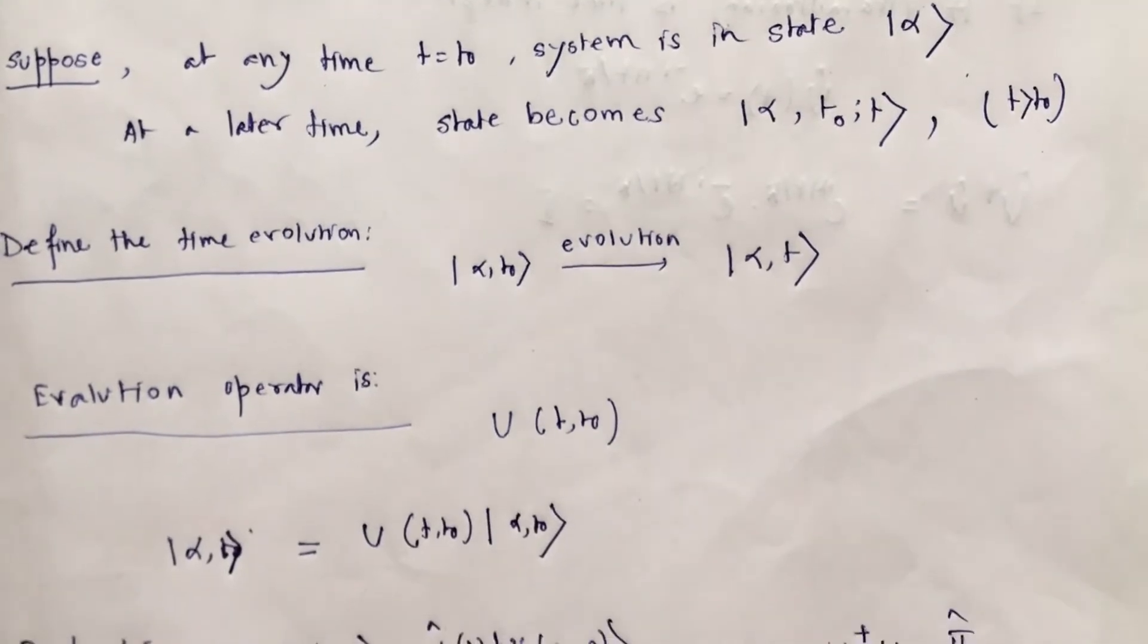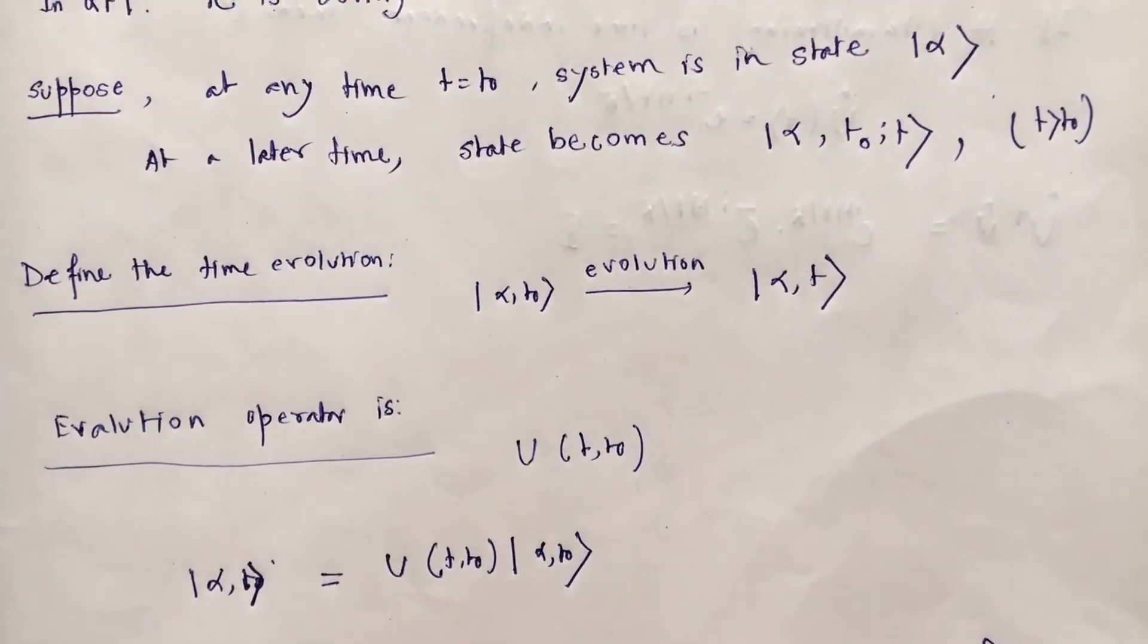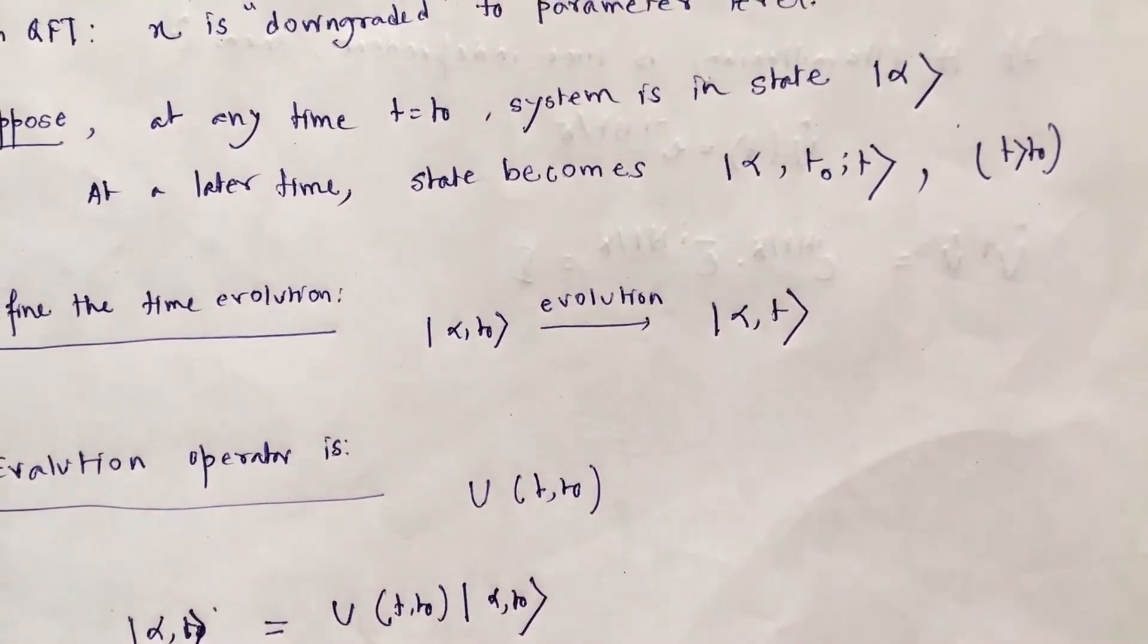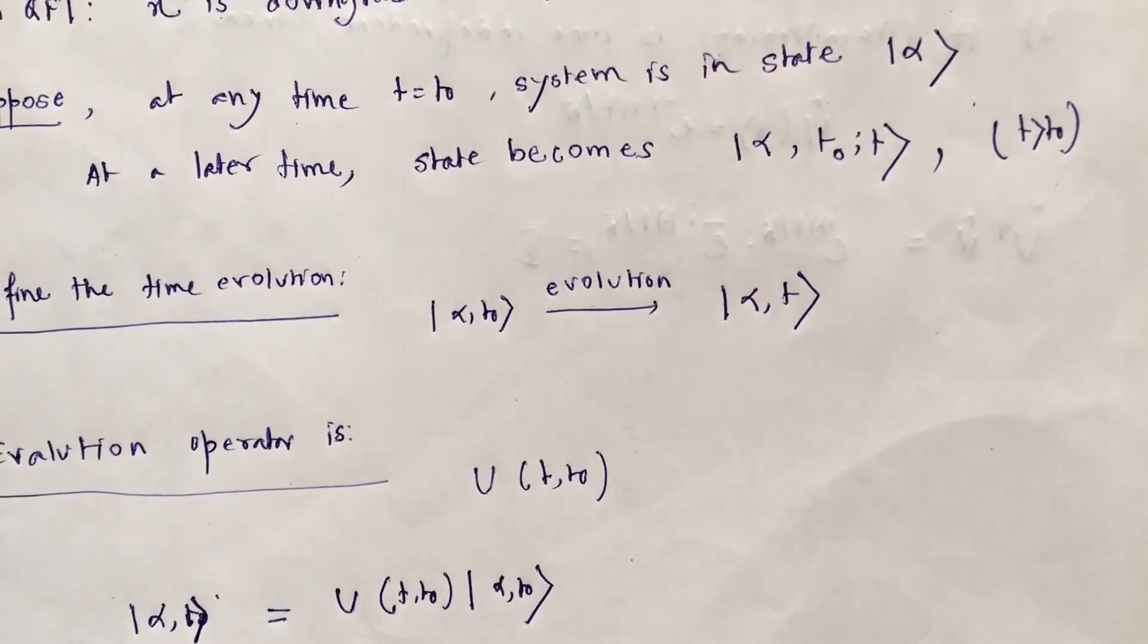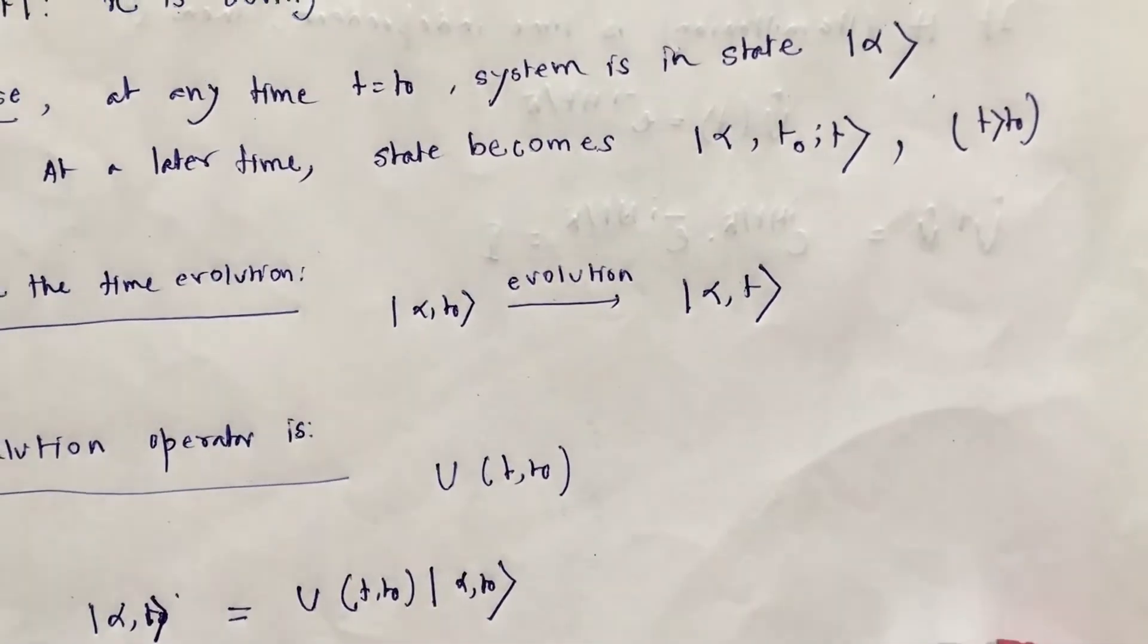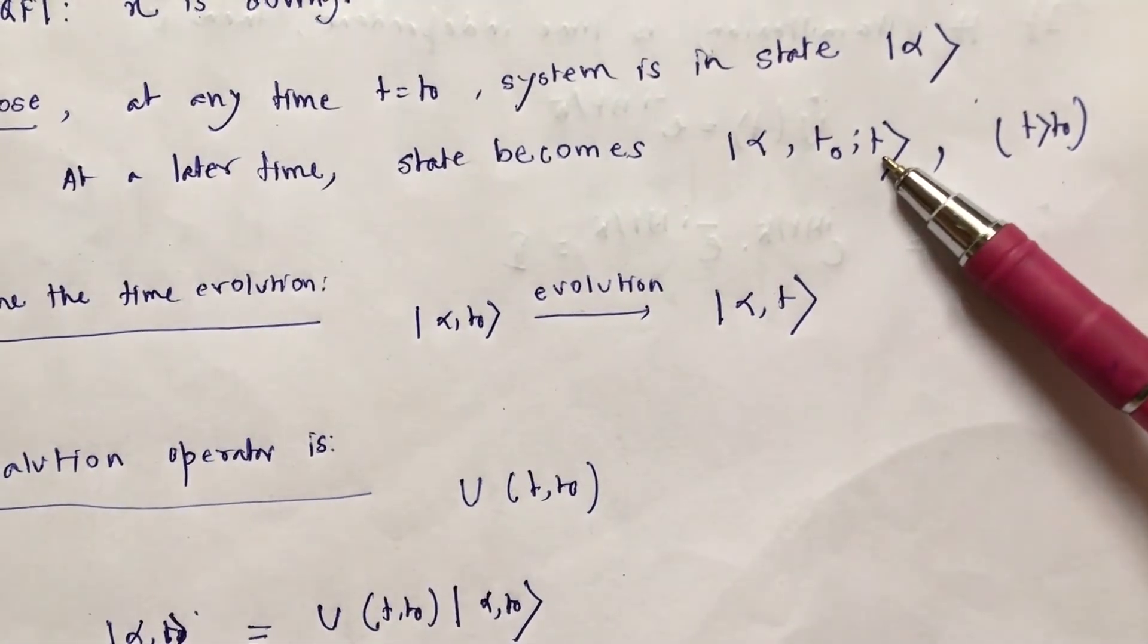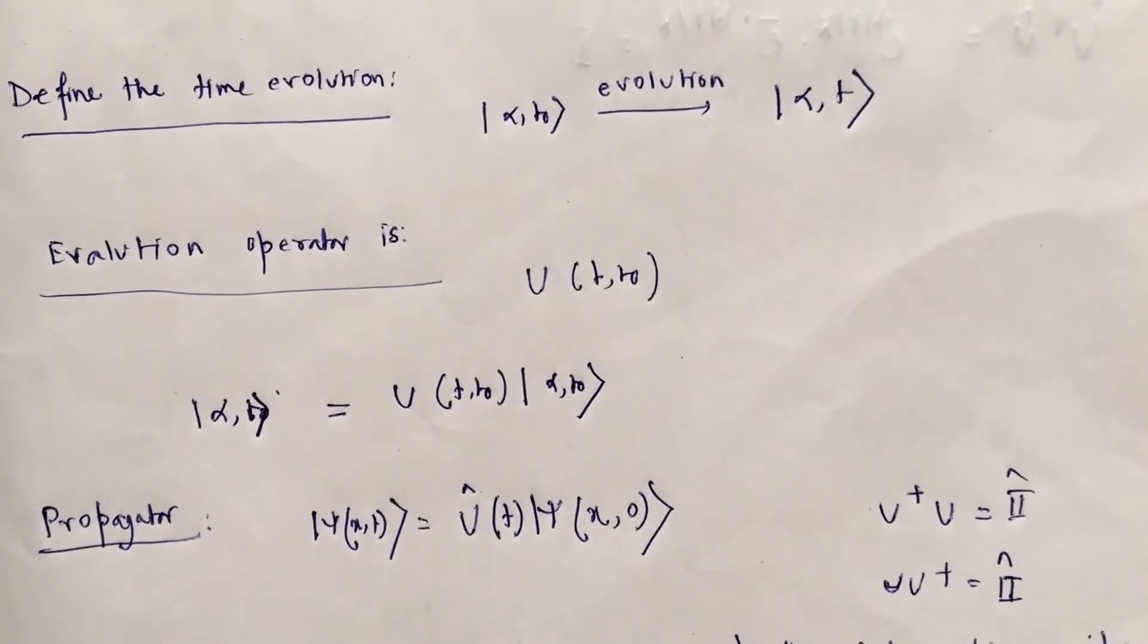Now suppose, when we think about a quantum mechanical system which is in a state alpha, and at a time t equal to t0, where t0 is any initial time where I have started the measurement on the system. And on that time the particle is at state alpha. So at a later time, the state becomes alpha comma t. t0 is the initial time, and now time has evolved into another time t. So my state is now alpha t.